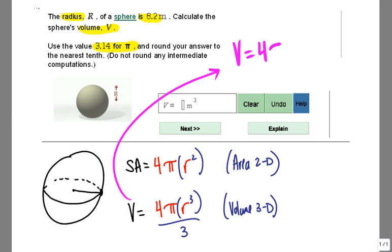Volume equals 4πr³ over 3. Here our radius is going to be 8.2, so our numbers are going to look like this: 4 times 3.14 times 8.2 cubed over 3.